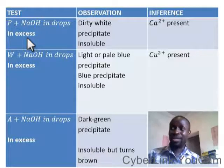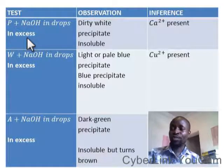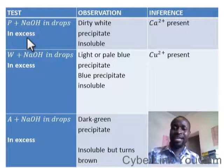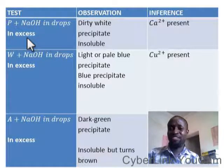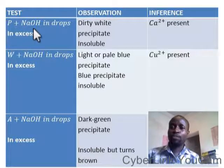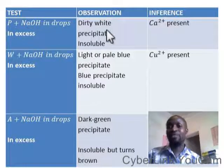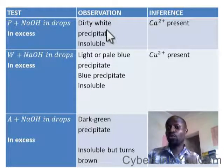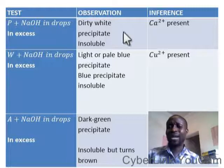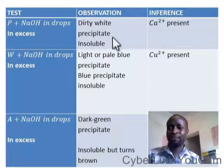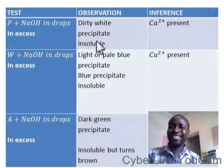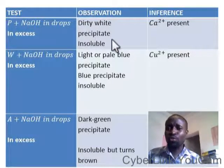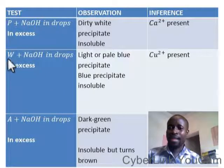If I give you a sample and say test for me — what are the elements in this sample? The elements are chemical elements. So you could do some of these tests: sample P plus sodium hydroxide in drops. If you have a dirty white precipitate, as soon as you see 'dirty white,' you are talking about calcium ion (Ca²⁺). When you add it in excess and it is insoluble, it is calcium hydroxide.